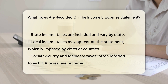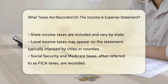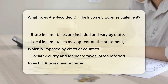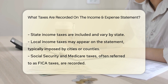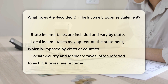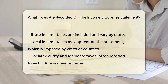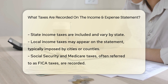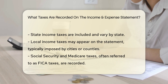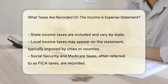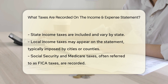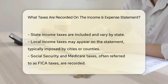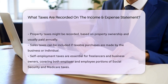Local income taxes may appear on the statement as well. These are typically imposed by cities or counties. Social Security and Medicare taxes, often referred to as FICA taxes, are also recorded. These fund social programs for retirees and health care for seniors.